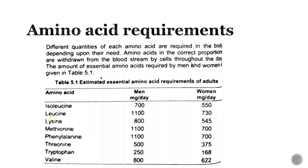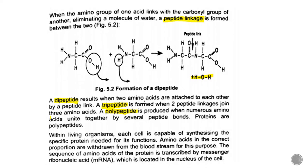Amino acids are assembled to create proteins for specific tissues — for the skin, for the hair. The proteins made for the heart are different from those made for other tissues. This is how our body makes different proteins, and every protein has a different function.